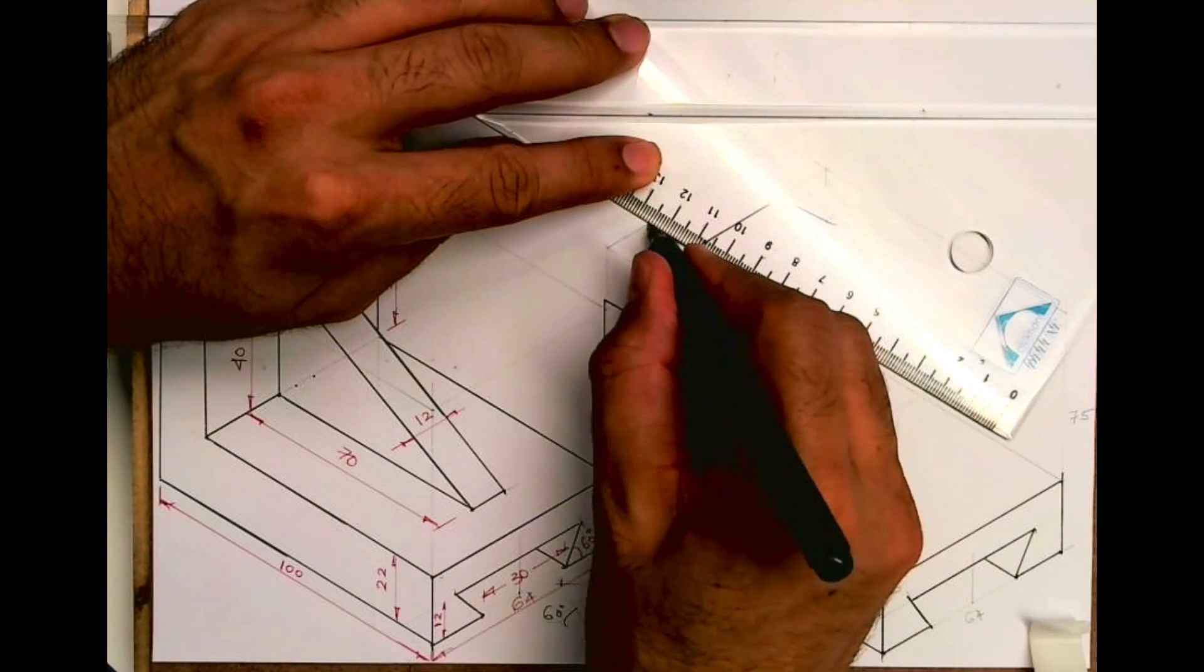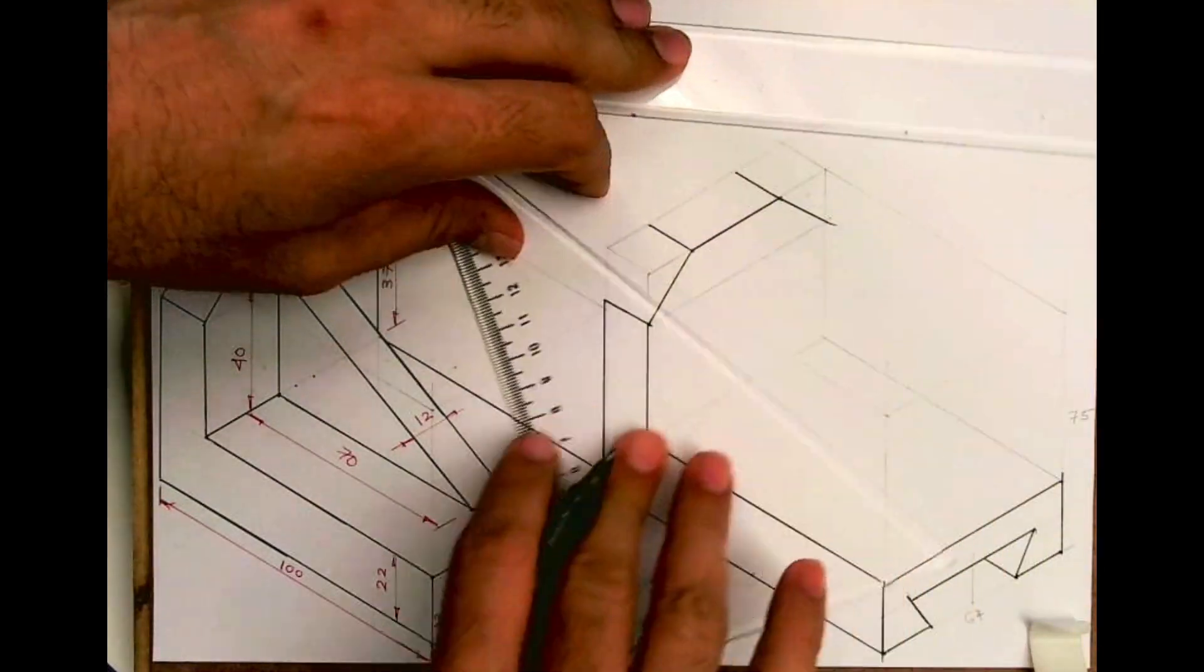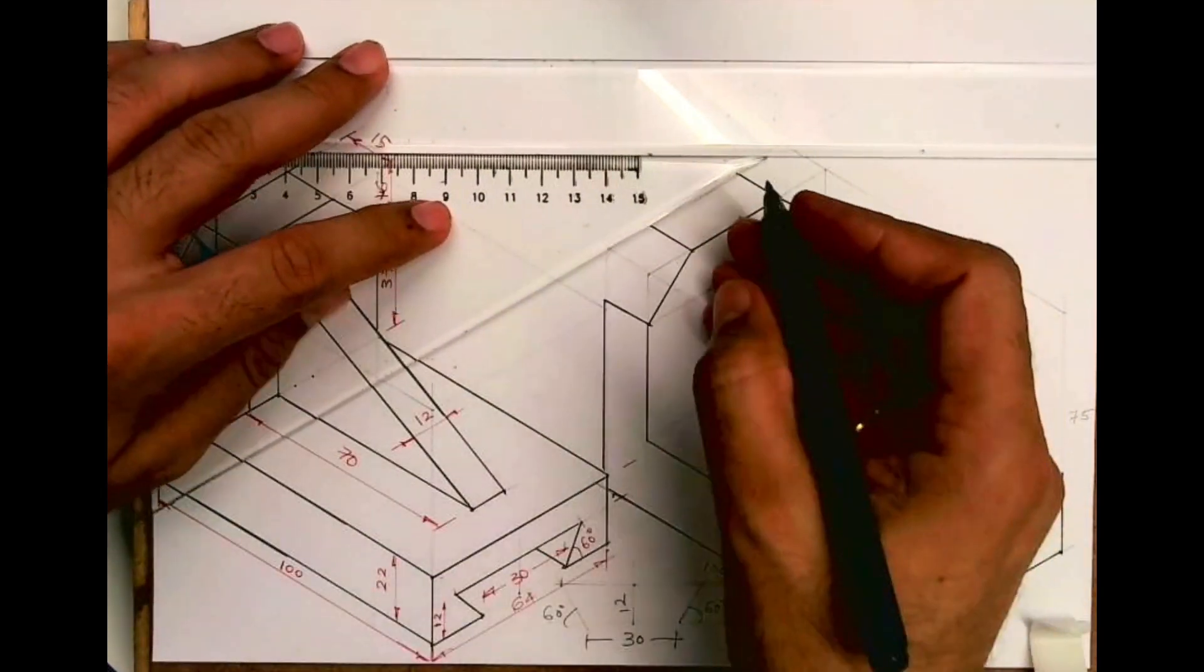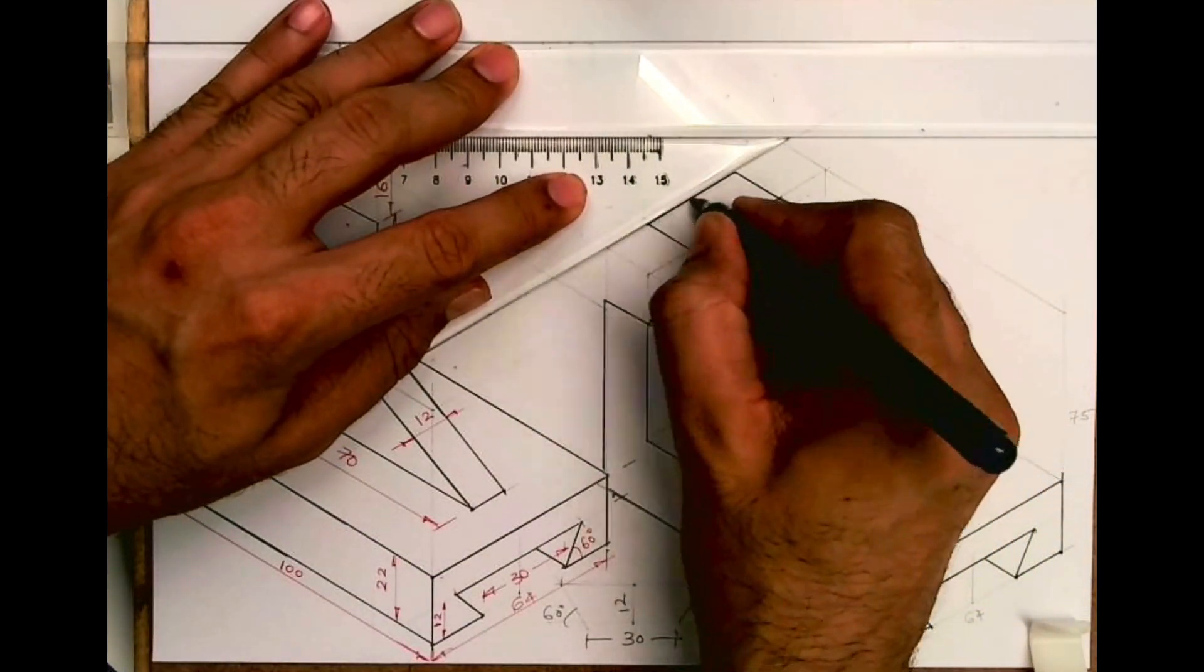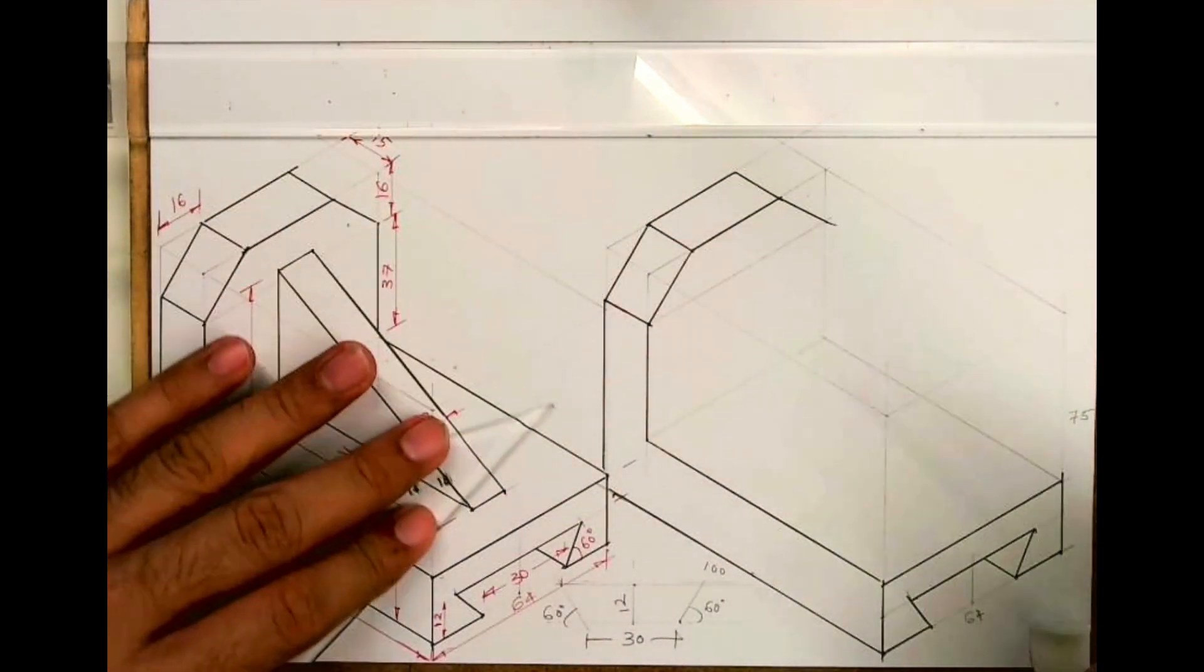After that, you take this line behind and you join this. See, this is what you will get.